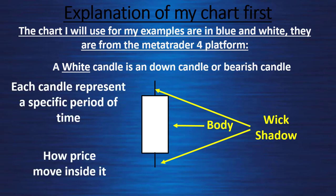And how the price moves in a bearish candle: it's a down candle, so the price went down. It started up right here, then it moved a little up, was rejected all the way down, and moved a little up again, and it finished there. The entry and exit point show the body, and the extreme points show where the price has been rejected.